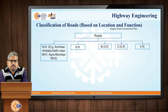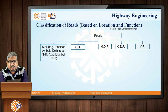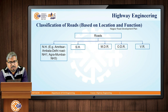Other district roads serve rural regions of production centers and outlets. Their function is similar to major district roads — connecting markets, outlets, market centers, and district headquarters to other main roads. They have lower design specifications compared to major district roads.